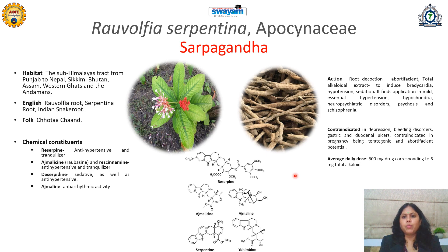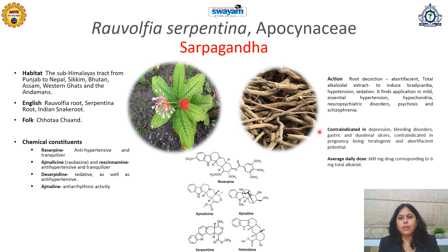This root powder is useful in hypertension, neuropsychiatric disorders, psychosis, and even schizophrenia. The drug is contraindicated in depression, bleeding disorders, gastric and duodenal ulcers, and even in pregnancy due to its teratogenic and abortifacient potential. As per the pharmacopoeia, 600 mg root powder is the mentioned average daily dose.